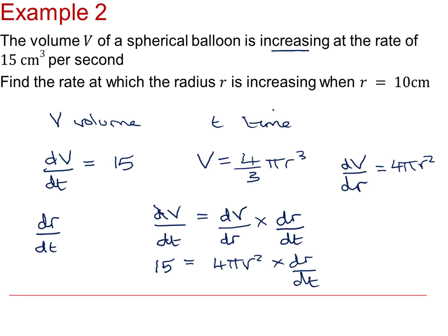So at the point when r equals 10, which is what we are given in the question, we then can say that dr by dt will equal 15 over 4 pi times 10 squared. So that is the rate at which the radius r is increasing when r equals 10 centimetres.